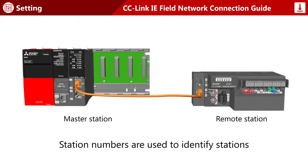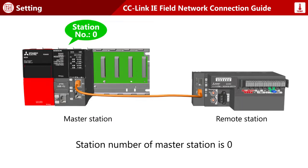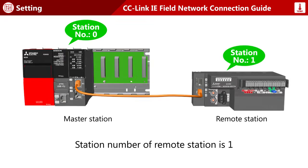Just as individual telephones are assigned telephone numbers for identification, station numbers are used to identify stations. The system shown here is configured with two stations. The station number of the master station is always fixed to zero. For the remote station, set the station number to one.